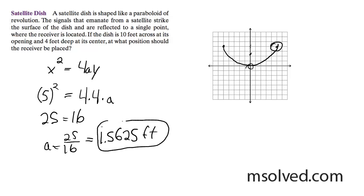This is our solution. This is how far the receptor should be. So if you have a dish, you know, we have the little receiver here coming up. It should be 1.5625 feet, so that's it.